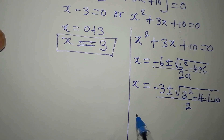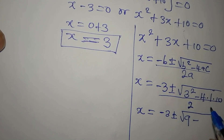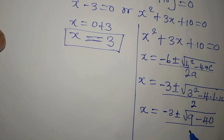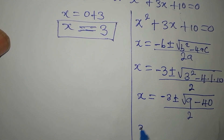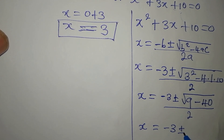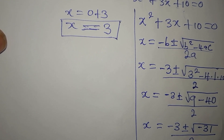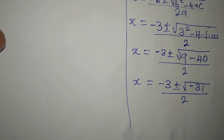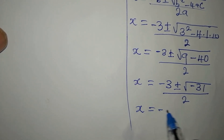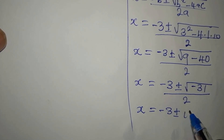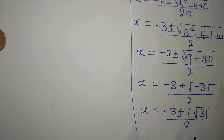We have 9 - 40, giving us -31. So x = (-3 ± √(-31)) / 2. The negative under the square root can be taken out as i, so x = (-3 ± i√31) / 2. By the way, this is a two-in-one solution.